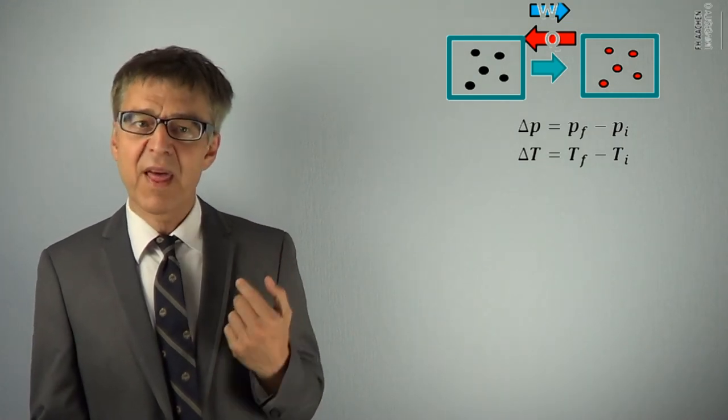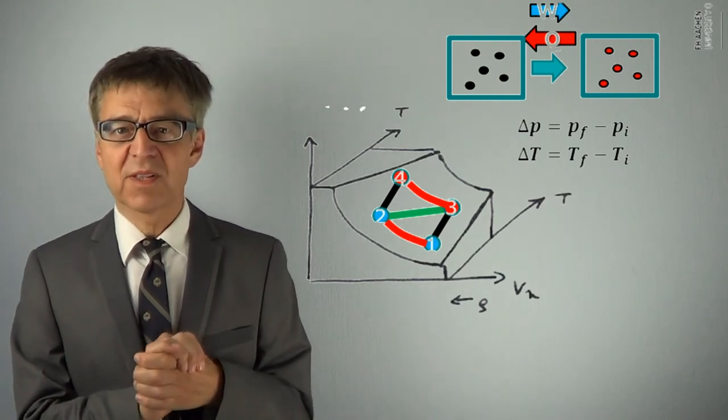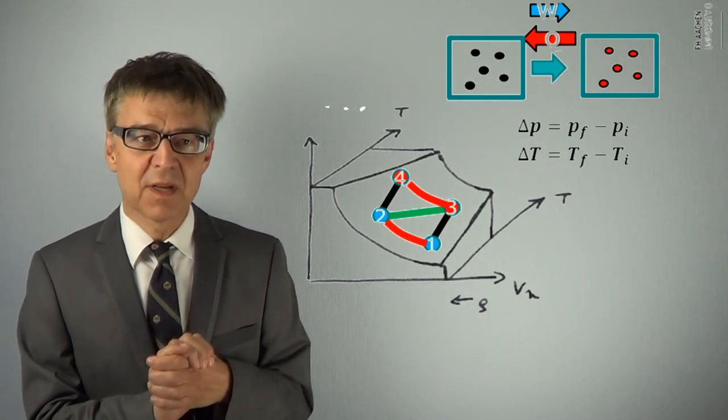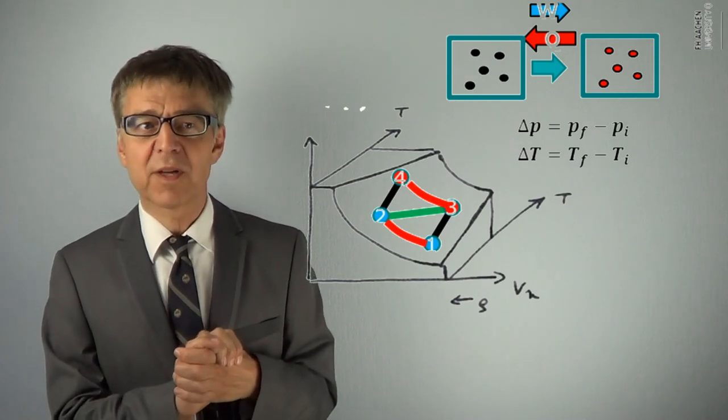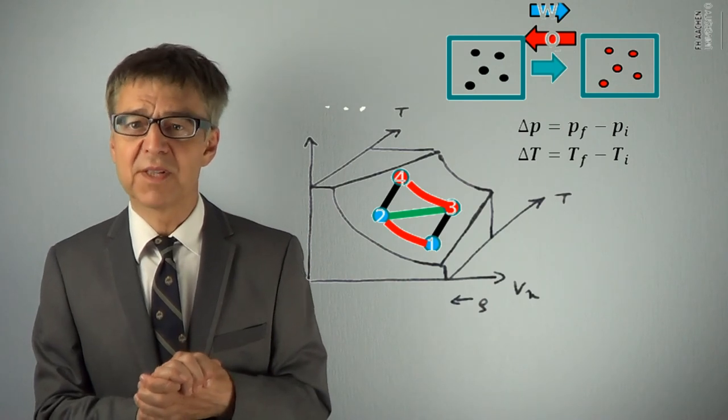If the path is reversible, then the maximum amount of work is obtained. With irreversible paths, part of the ability of doing work is wasted. With spontaneous paths, the useful work will be zero.